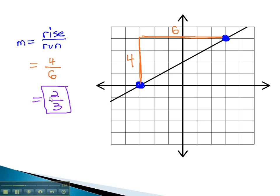This means for every 2 spaces the graph climbs, it will also run a distance of 3.